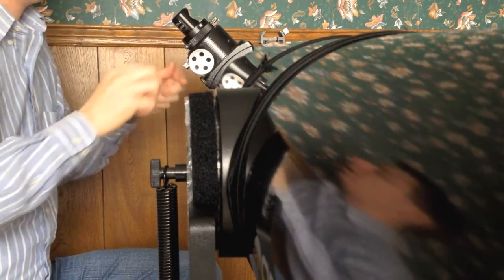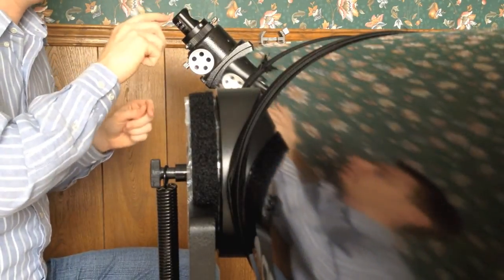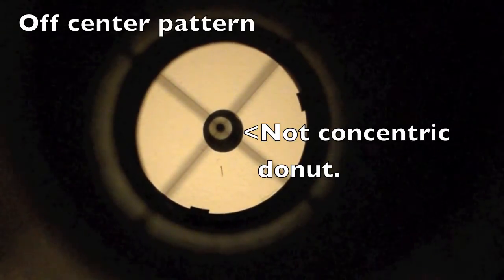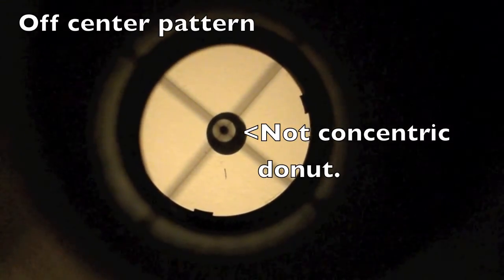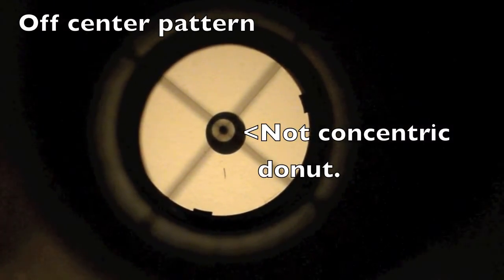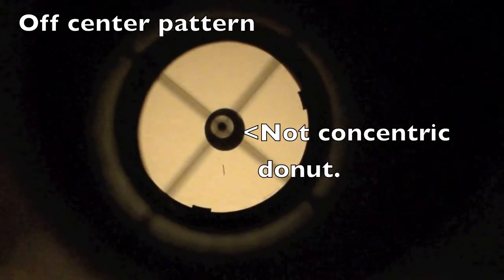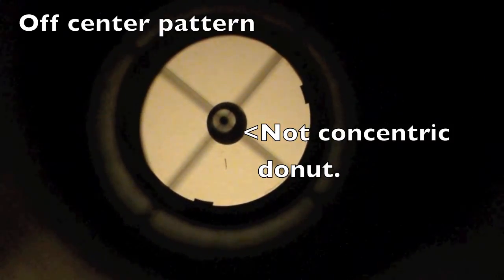If your laser collimator was off, you'd be able to tell with the Cheshire. Here's the view through the Cheshire. You can see the crosshairs line up and the center spot and reflection is off center, not a concentric donut. Here's the view through the collimation cap. You can see the off center donut and center spot.